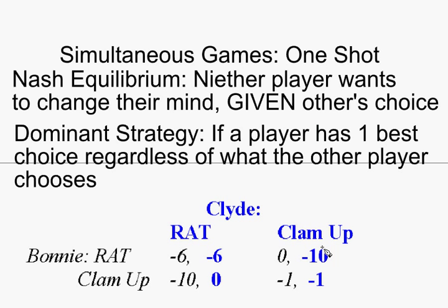Now that we understand the table, there are four possible outcomes. The goal of game theory is to try to make a prediction about what might happen. The two most common ways of looking at reasonable outcomes are: first, the Nash equilibrium — named after John Nash, who shared the Nobel Prize in game theory in the early 90s. Nash's idea is that an outcome is an equilibrium — a resting place, a place of no change — if neither player would want to change their mind given the other person's choice.